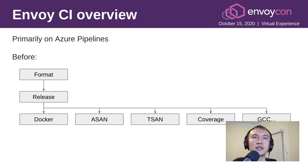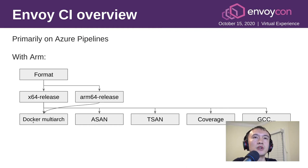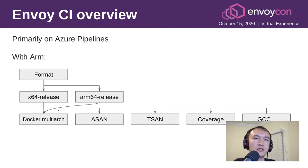Let's talk about the CI. The Envoy CI runs on Azure pipelines. Before we had ARM support, we ran format checks, release builds, and the binary build went to a Docker image, along with sanitizers, coverage, GCC, and so on. With ARM, we added a new ARM64 release job, and we take the binaries built from the X64 release and ARM64 release into a Docker multi-arch job, which builds a multi-arch image for both X64 and ARM64 and pushes it to Docker Hub.